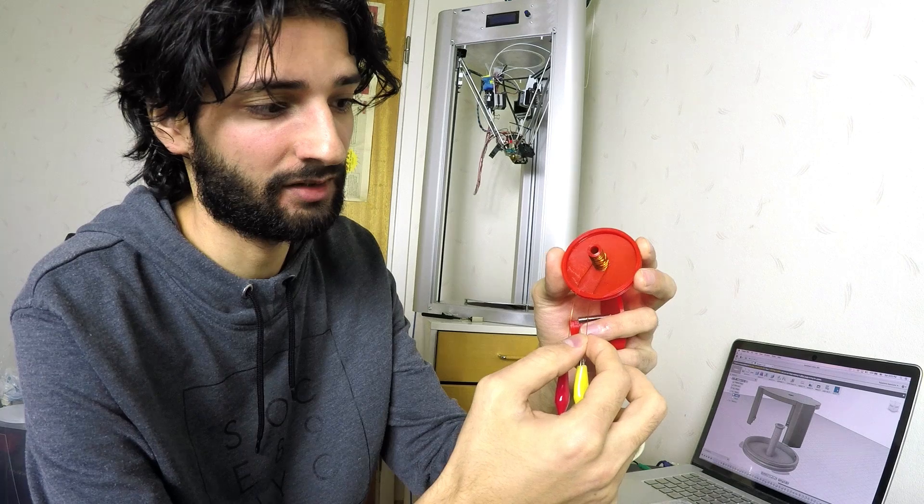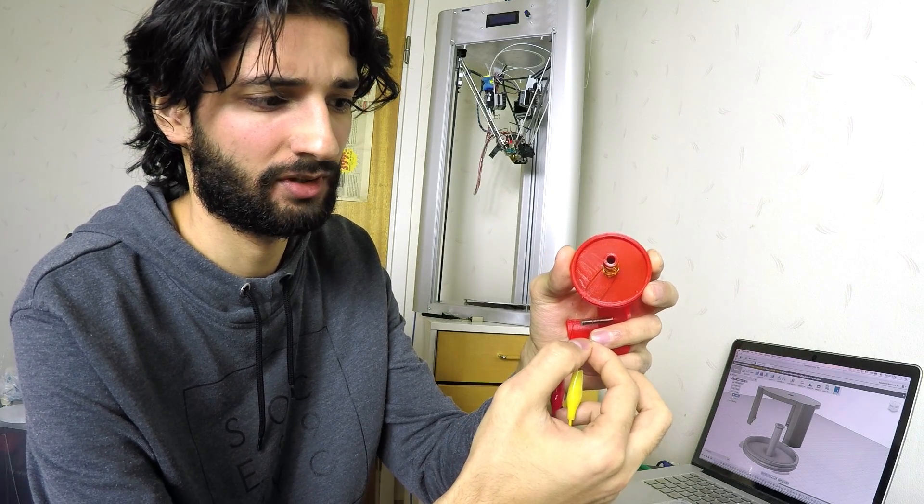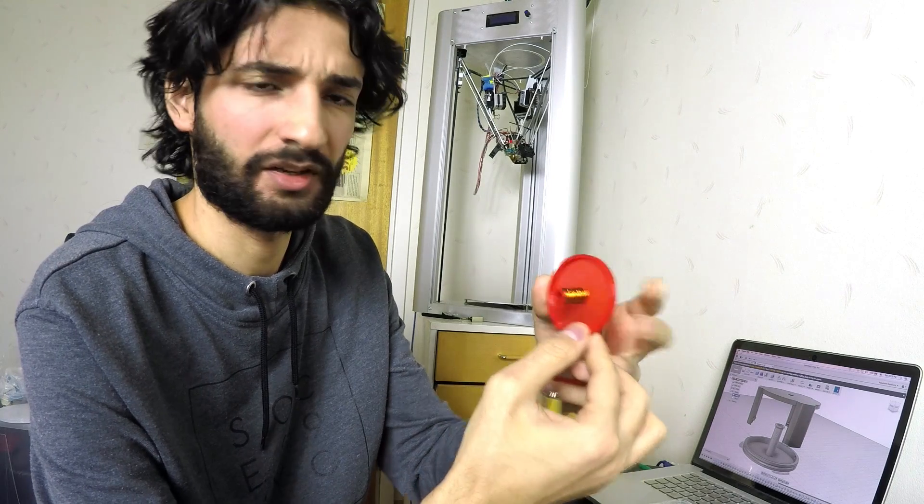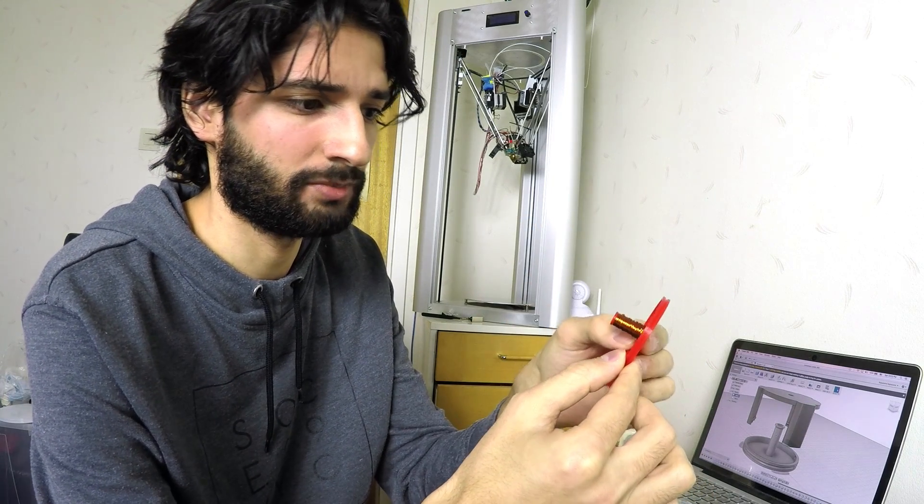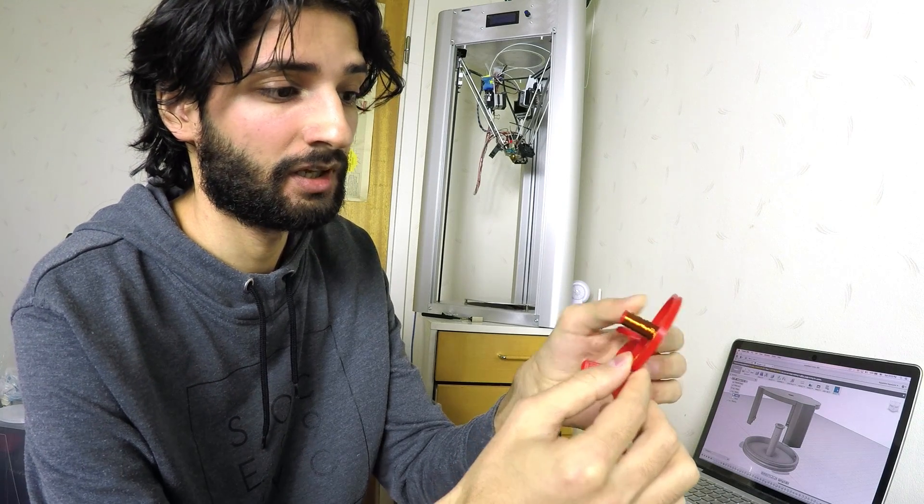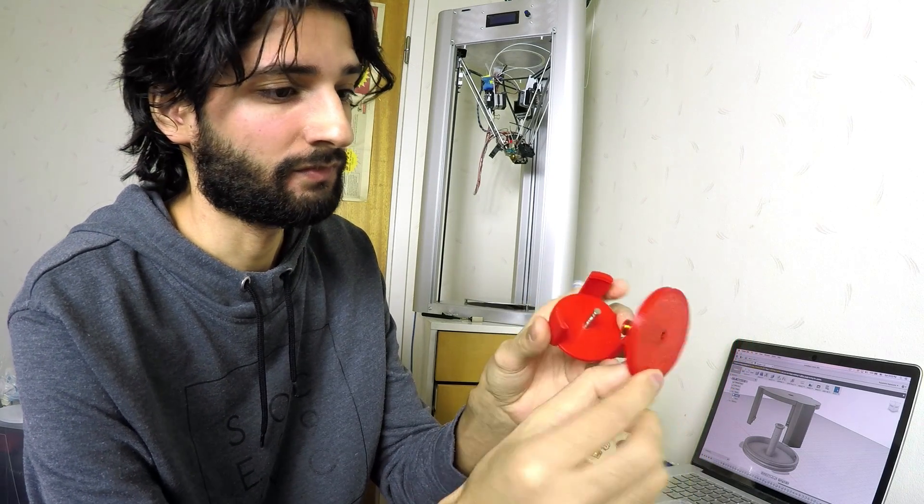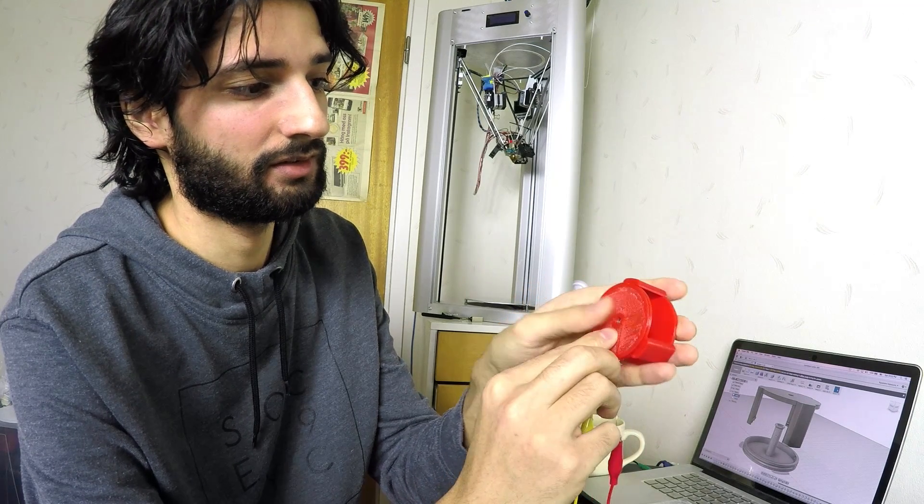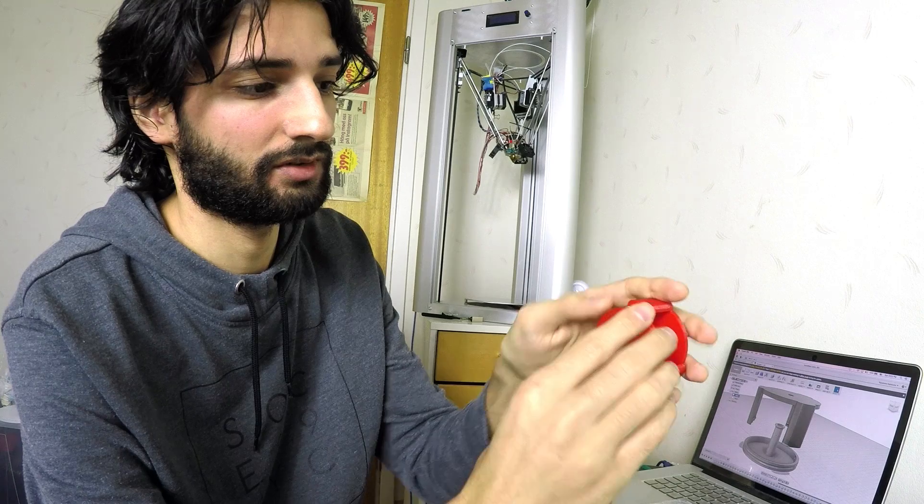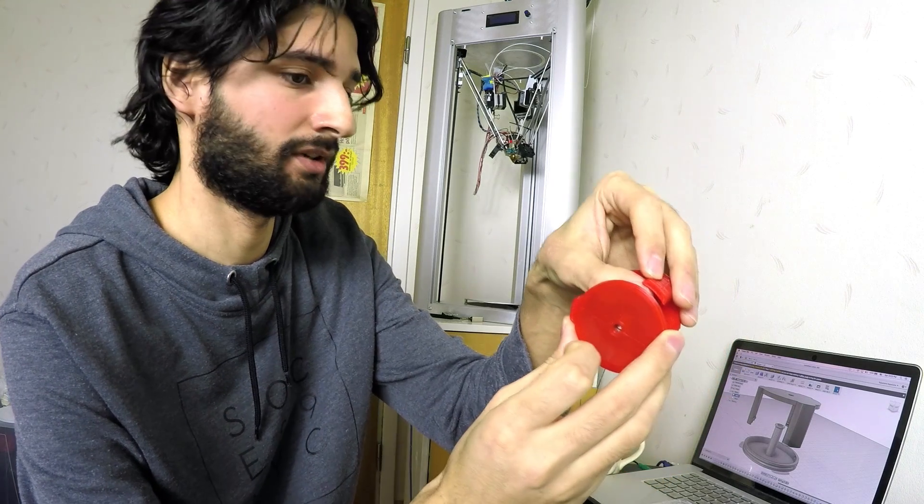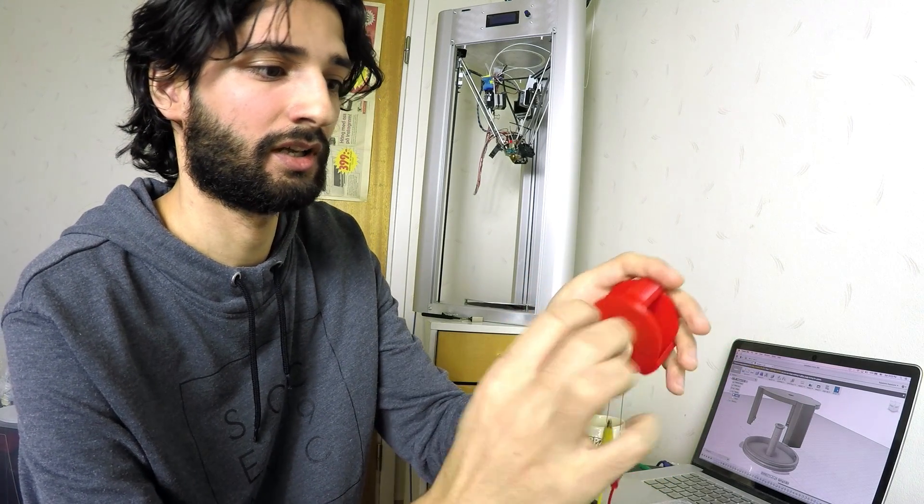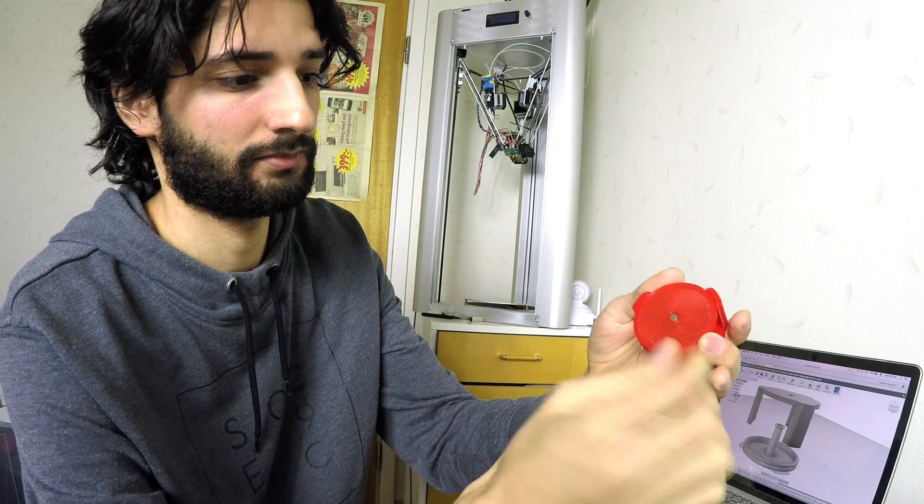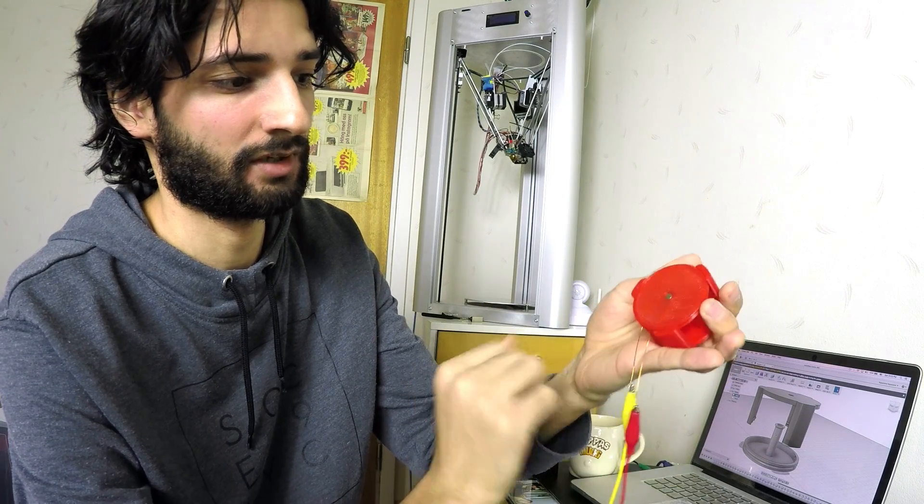The wire should be much thinner than this. This one is like 0.35 millimeter. I think it should be like 0.1 or something. It has to be calculated anyways. Just put it like that, and here there is an edge in this one as well, so it will snap like this.